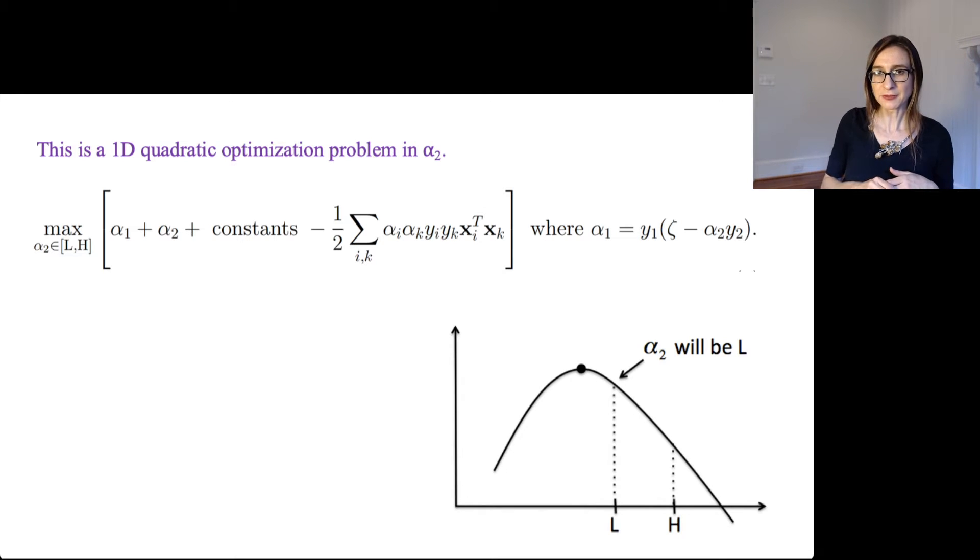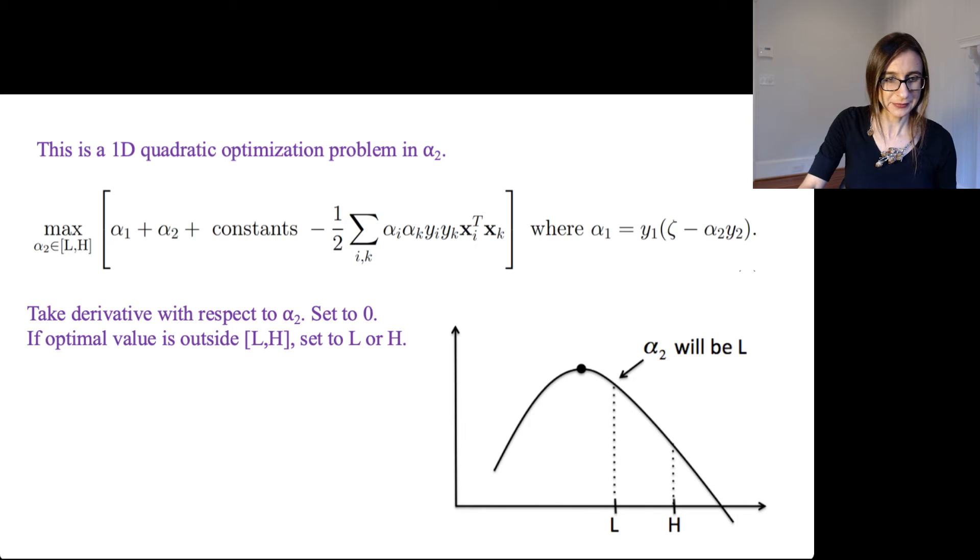Now if the extreme point is out of range, then we know that the solution is either the point where the derivative equals 0, or it's L, or it's H. Alpha 2 has to be in the range of L to H, so all we have to do is check these three points: L, H, and the point where the derivative is 0. And the solution is going to be one of those three points. So take the derivative with respect to alpha 2, set it equal to 0, and the optimal value is either that point or it's L or it's H.